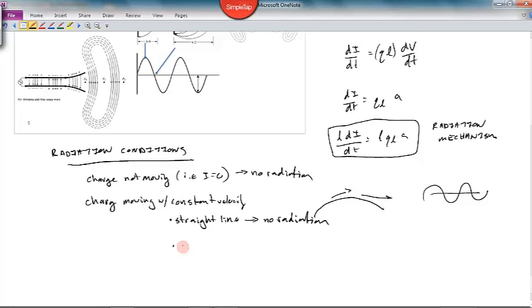What if it is curved, discontinuous, bent, whatever? Radiation occurs because the charge is seeing this form of acceleration.